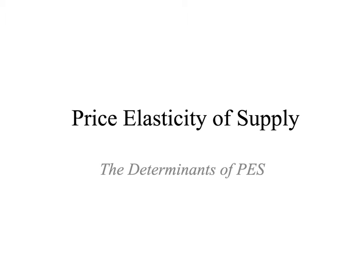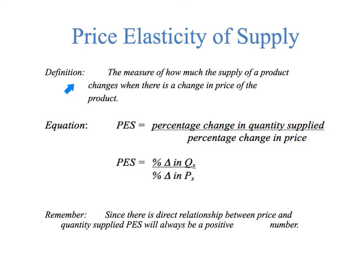Today we're going to take a look at price elasticity of supply, but more specifically the determinants of it. The price elasticity of supply is a measure of how much the supply of a product changes when there is a change in the price of the product. We calculate that by percentage change in the quantity supplied of product X over the percentage change in the price of X. Since there's a direct relationship between price and quantity supplied, PES will always be a positive number.